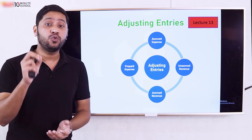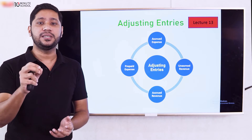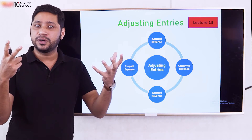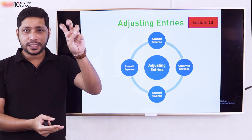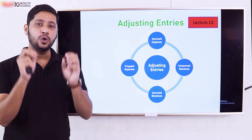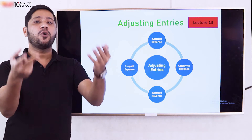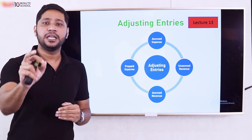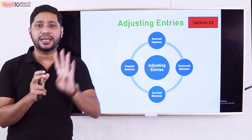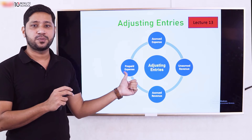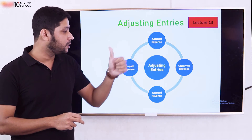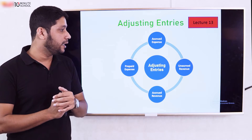On the accrual basis, revenues and expenses are adjusted through adjusting entries. These adjusting entries fall into four categories: prepaid expense adjusting entry, unearned revenue adjusting entry, accrued expenses adjusting entry, and accrued revenue adjusting entry.